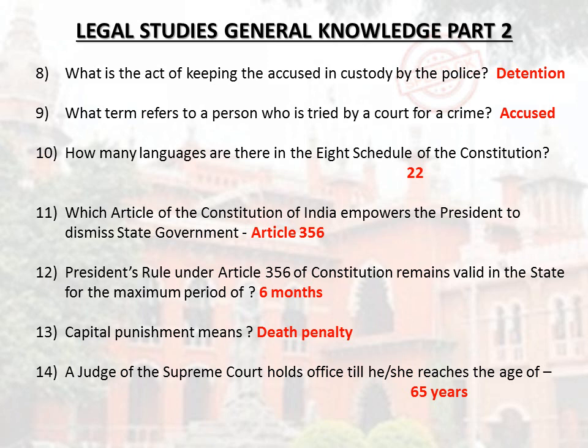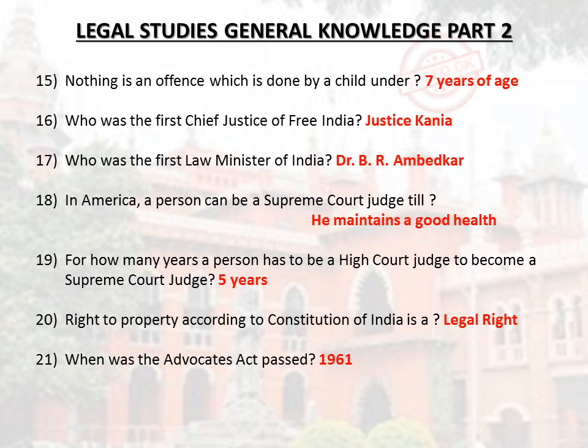A judge of the Supreme Court holds office till he or she reaches the age of 65 years. Nothing is an offense which is done by a child under 7 years of age.